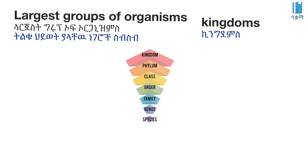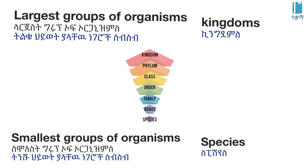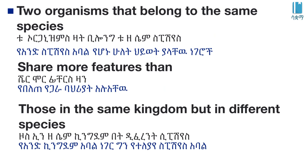The largest group of organisms is the kingdom. Organisms that belong to the same species share more features than those in the same kingdom but in different species.